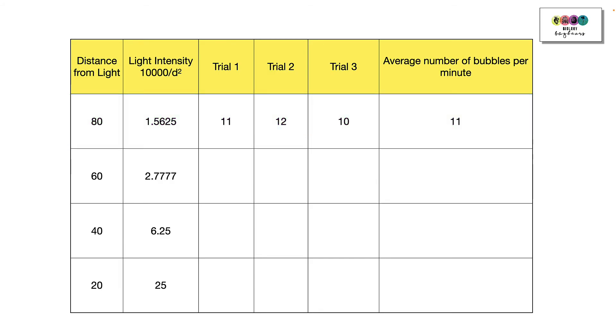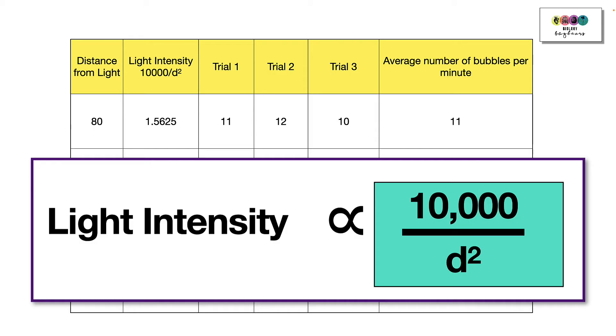To calculate the light intensity, we use this formula, and we use the figure 10,000 because we usually get our distances in centimetres. So you're going to get each distance squared and divided into 10,000.